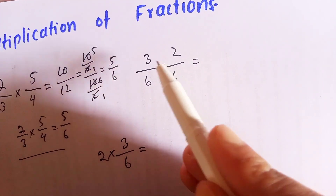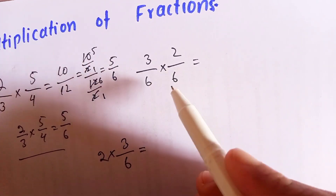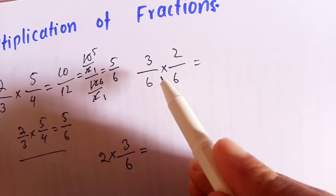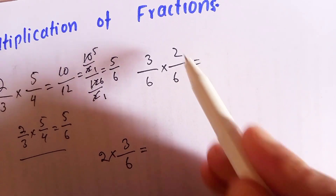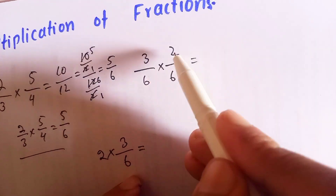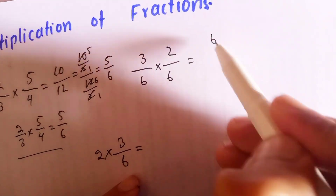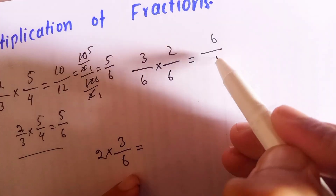In this next example, we are multiplying fractions with the same denominator. We have three over six times two over six.